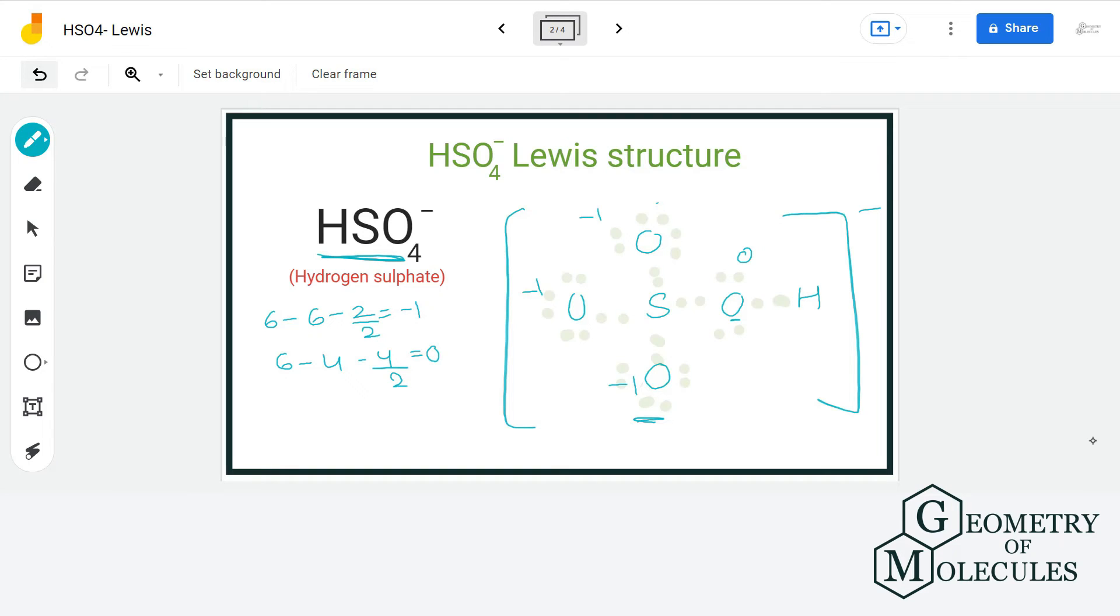So let us see for the sulfur atom. We have 6 valence electrons minus 0 non-bonding electrons minus 8 bonding electrons divided by 2. That will give us a formal charge of plus 2. Now these charges here represent that there is unequal charge distribution between the atoms. Now that results in instability of the molecule and that is unwanted.